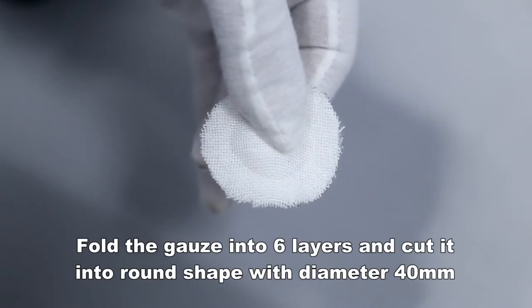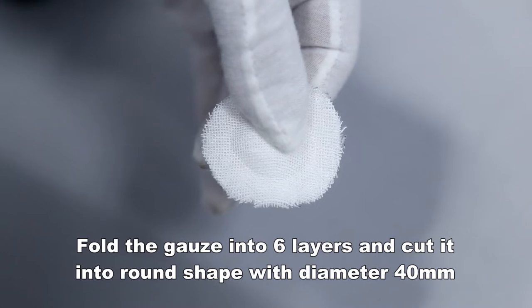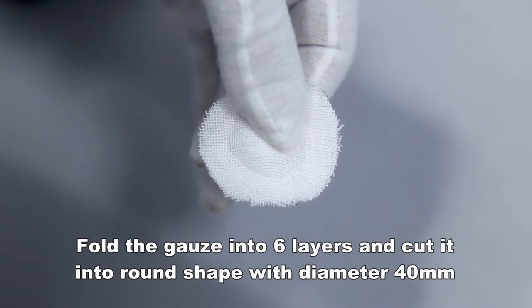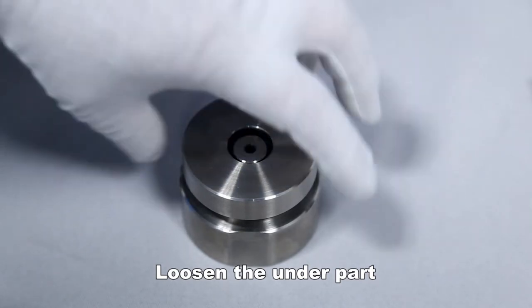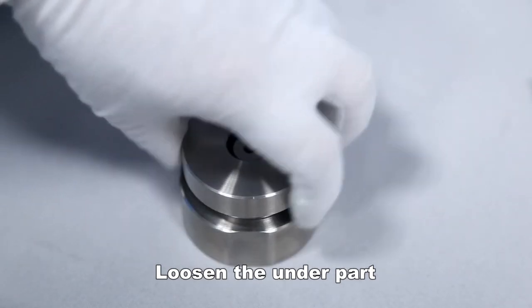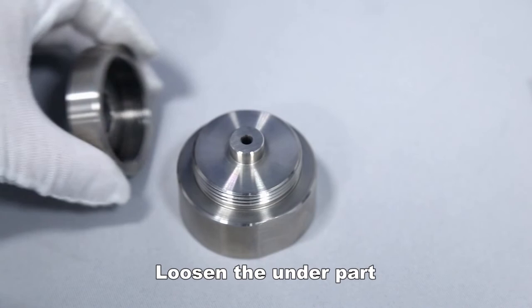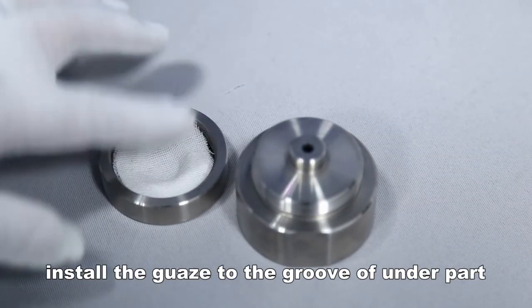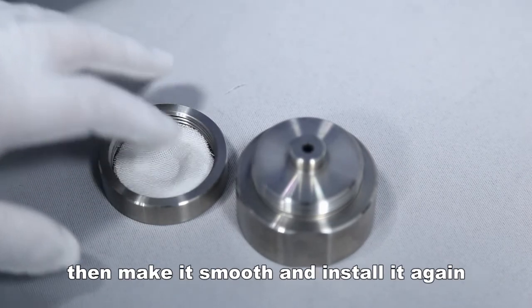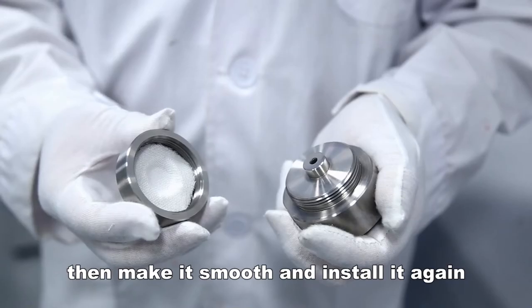Fold the gauze into six layers and cut it into round shape with diameter 40 millimeters. Loosen the under part, install the gauze to the groove of the under part, then make it smooth and install it again.